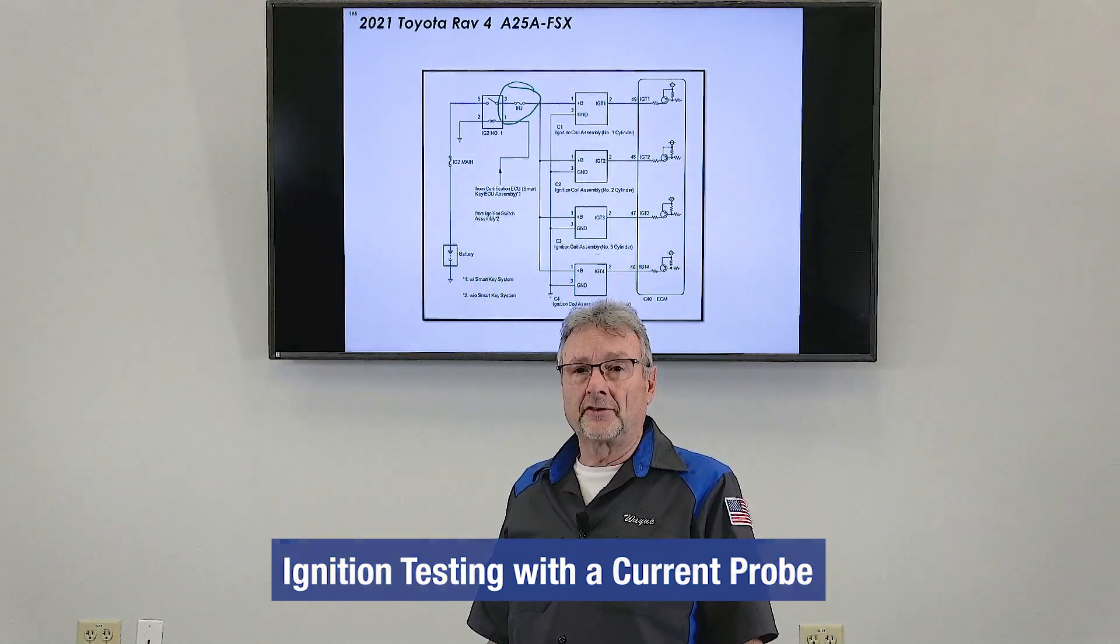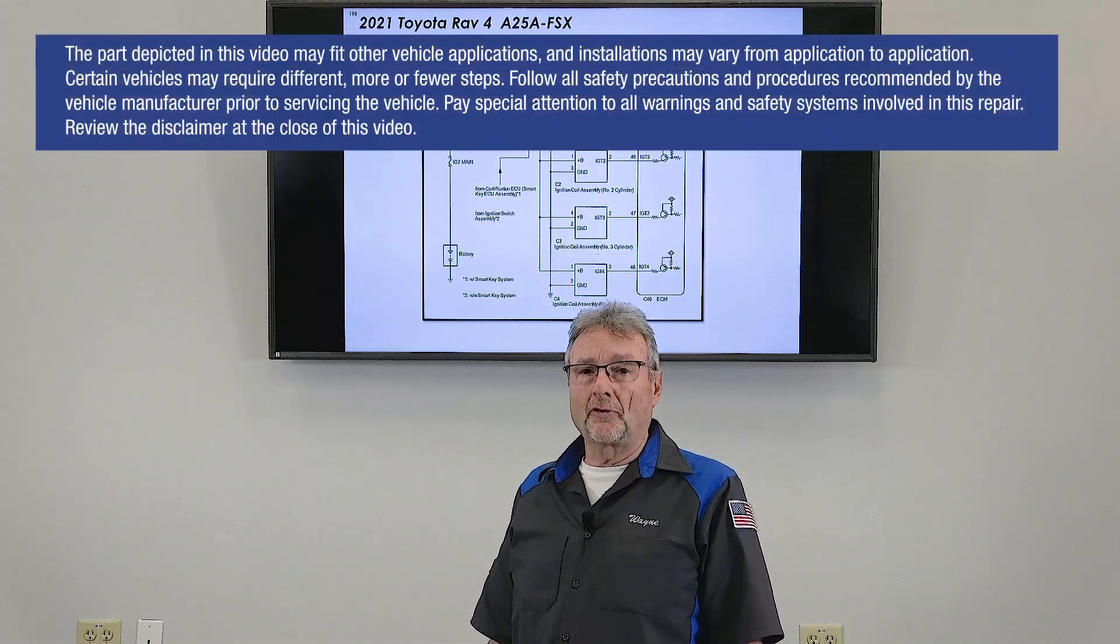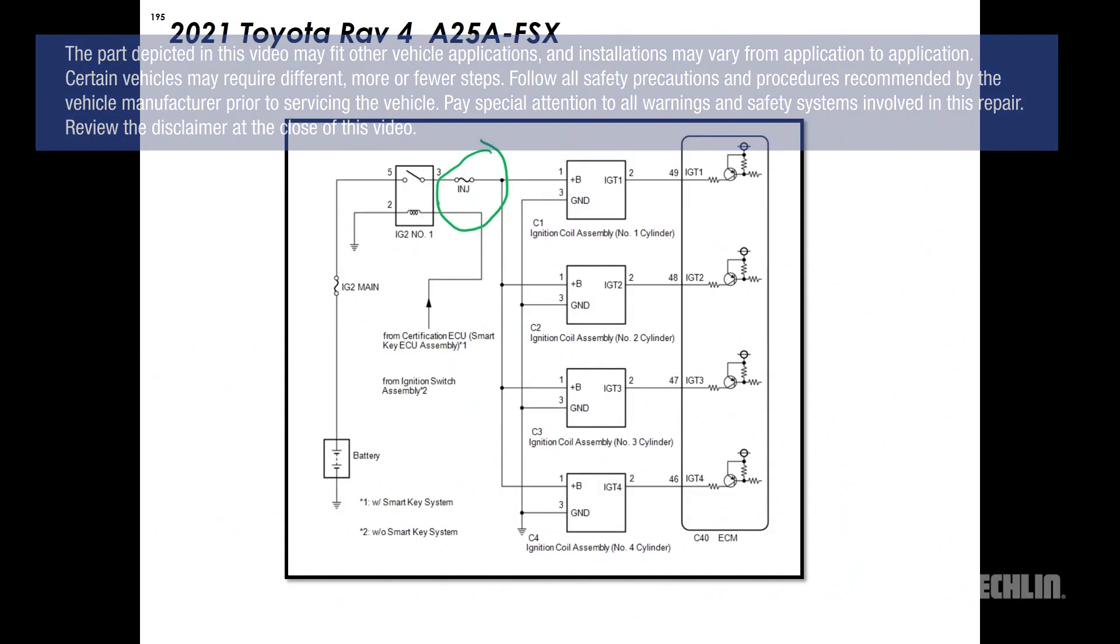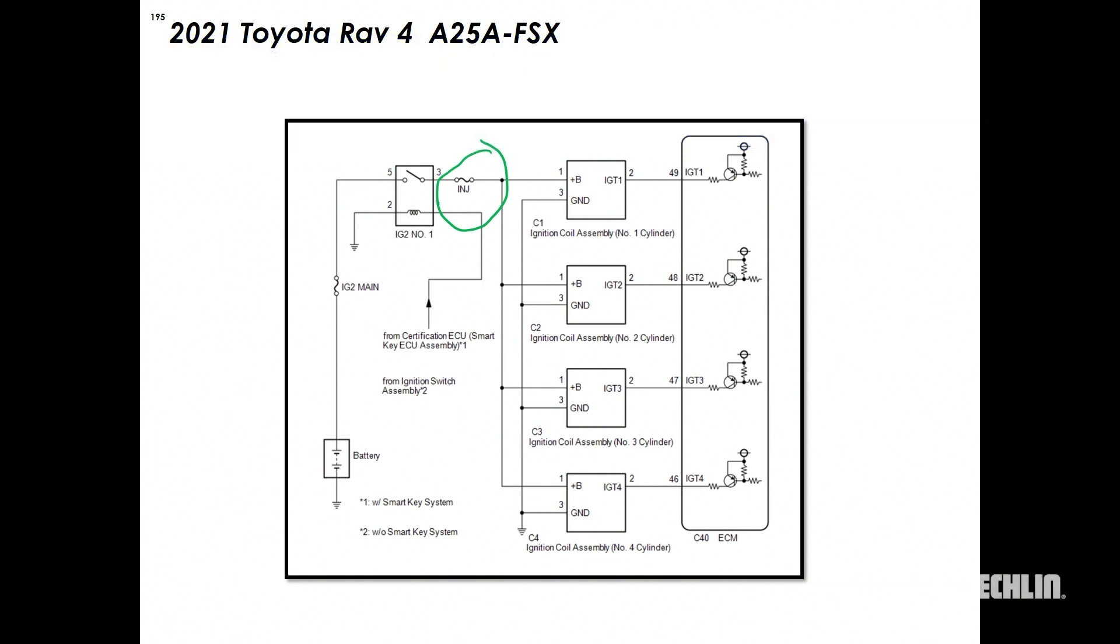We'll see how easy it is to current ramp ignition coils on a Toyota RAV4. You'll see in the screen I pulled a wiring diagram for the ignition system, identified the injector fuse which just happens to power all the ignition coils. The fuse box gives us easy access to the power supply without much harm or damage to the wiring harness of the vehicle. Let's go over there and make our connections.